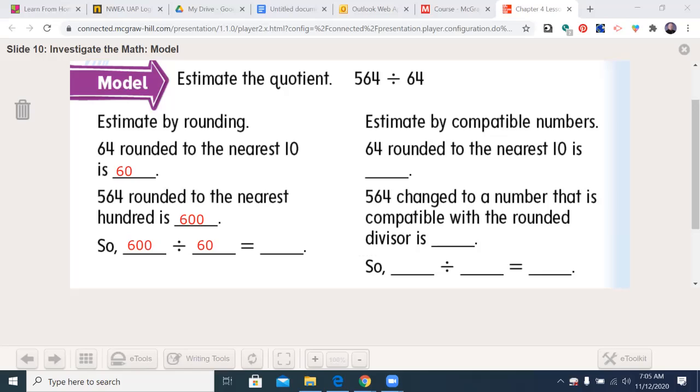Now, all I have to do is take my new dividend of 600 divided by my new divisor of 60, and now we have a little trick we can use. Remember, we can cross out a 0 on each side. Kind of like dividing both by 10. And now I have 60 divided by 6. 6 goes into 6 one time. There's still 1 0 there, so I need to make it 10.